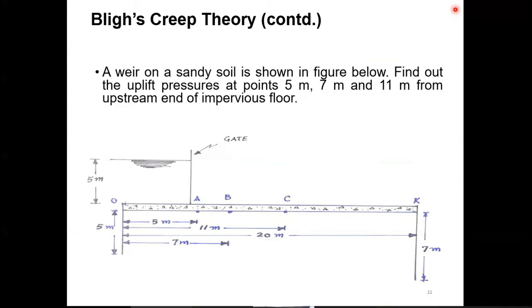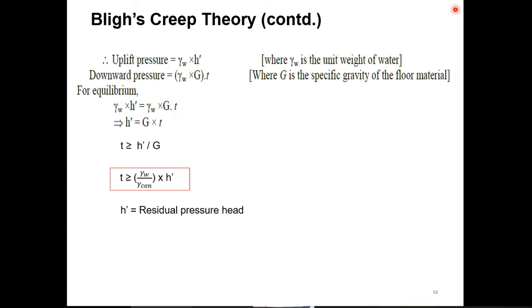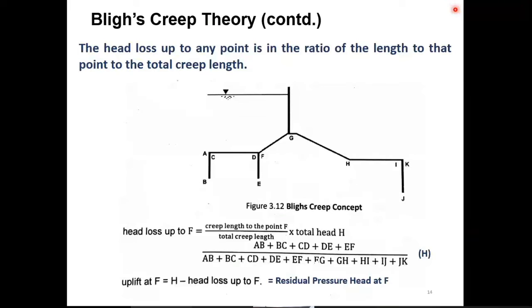According to the Blythe theory, how we can compute the uplift pressure at any point? Someone should respond to me. How we can compute uplift pressure at any point? Maybe here, here, here and anywhere. According to Blythe theory, compute the head loss up to that point. And how do you compute the head loss up to that point?